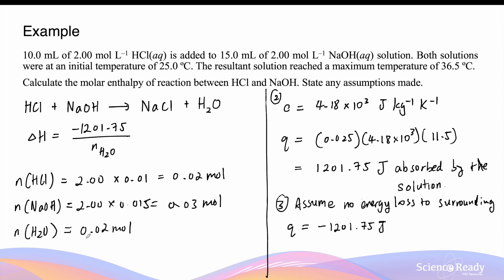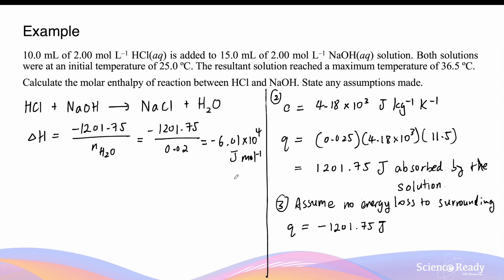Now that we have the moles of water, we can calculate the enthalpy of neutralization: ΔH = −1210.75 J ÷ 0.02 mol = −6.01 × 10⁴ J/mol. Since the fewest significant figures given is 3, we leave the answer to 3 significant figures. Converting to kilojoules per mole by dividing by 1000 gives ΔH = −60.1 kJ/mol.